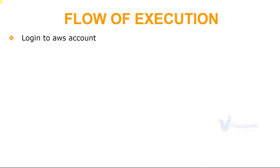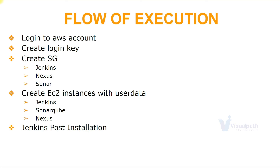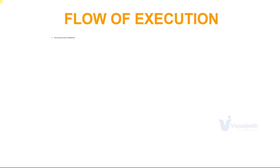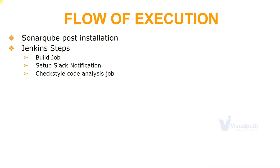For the flow of execution: first we'll log into the AWS account. We'll create a login key, create security groups for Jenkins, Nexus, and SonarQube servers, and create EC2 instances with user data to provision Jenkins, SonarQube, and Nexus. We'll do Jenkins post-installation steps, set up Nexus repository with three Maven repositories inside it, then do SonarQube post-installation steps. For Jenkins setup, we'll first set up a build job, set up Slack notification, and set up a Checkstyle code analysis job.